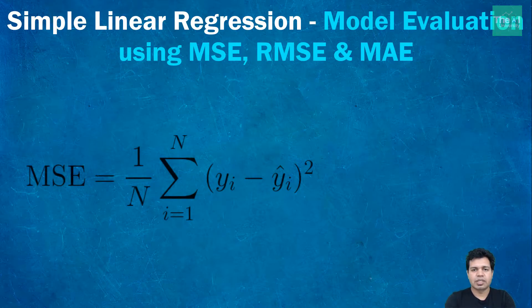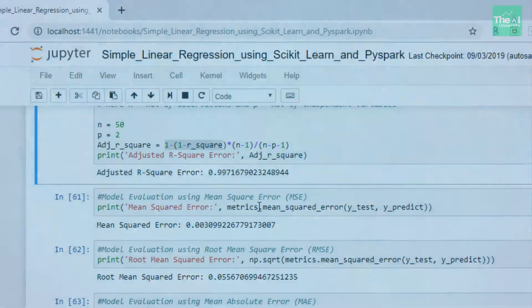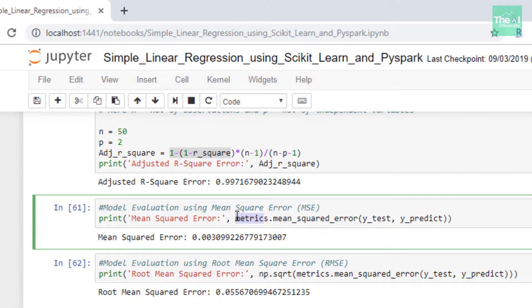We can calculate the mean square error using scikit-learn's metrics package. So let me open the Jupyter notebook here. I'm utilizing this metrics method and there is a function called mean_squared_error associated with it.